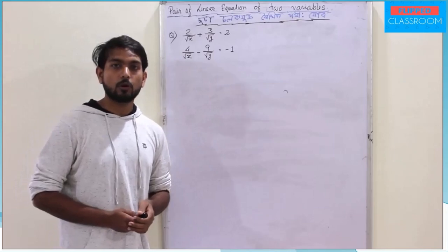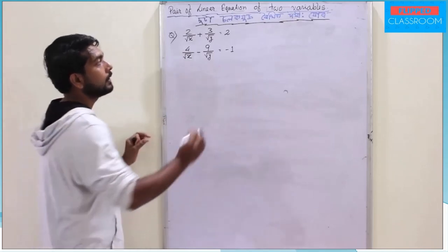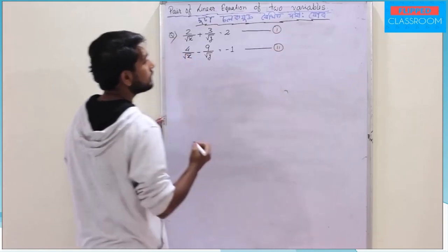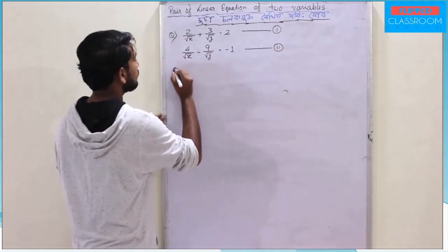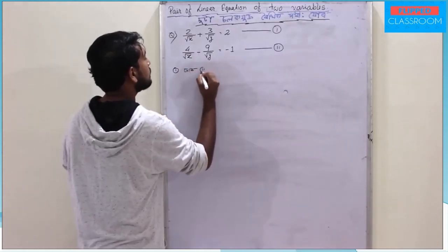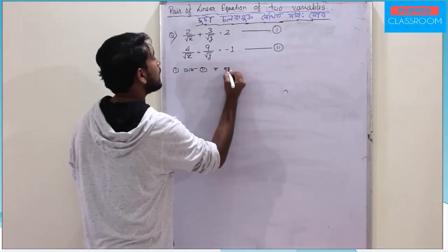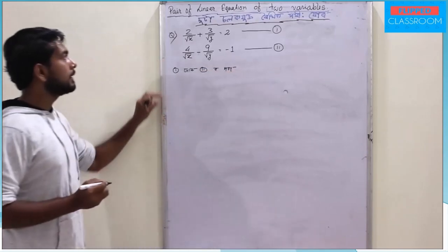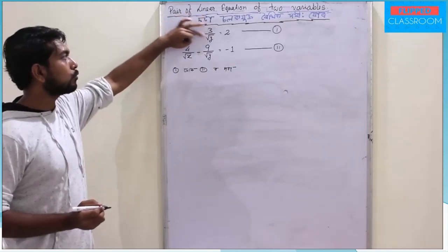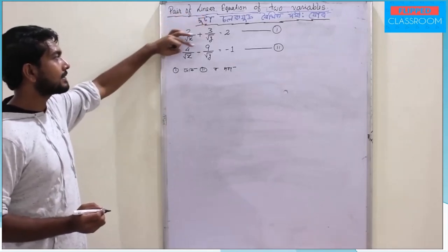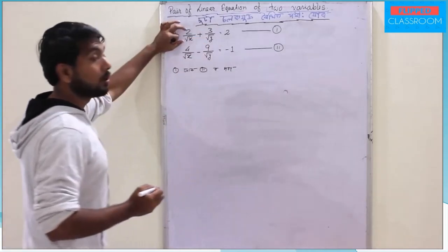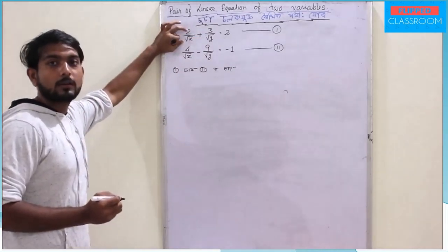So I will say, when I am going to solve this, I will use substitution. Let me take: 2 by √x and 3 by √y, or 4 by √x and 9 by √y.